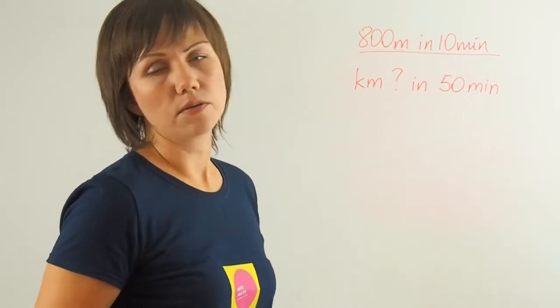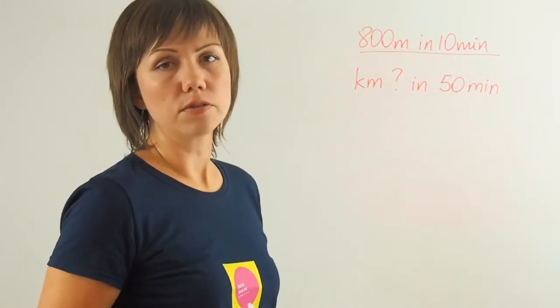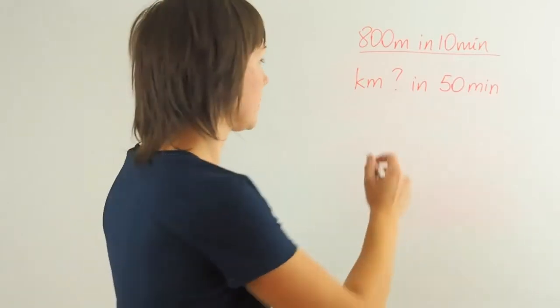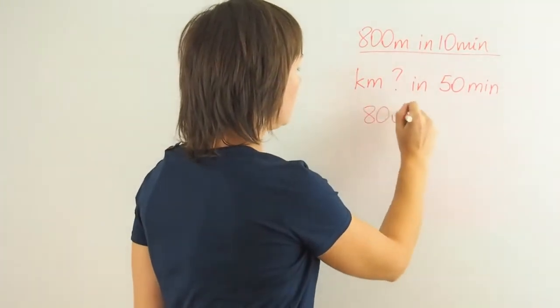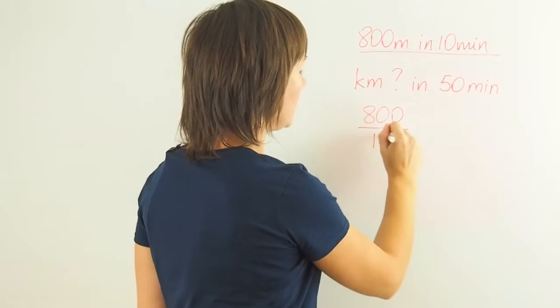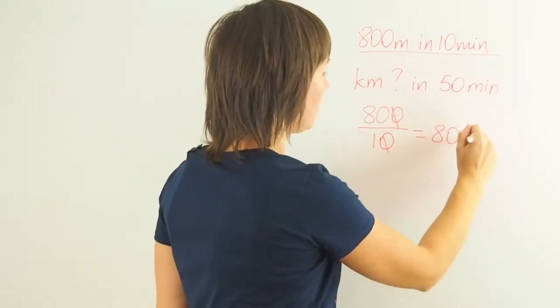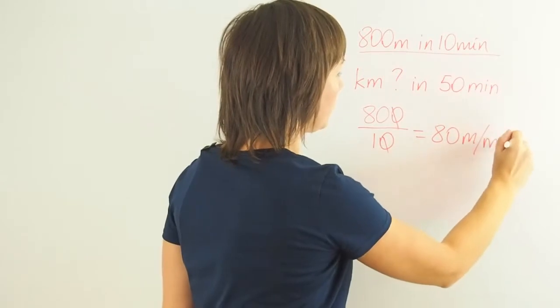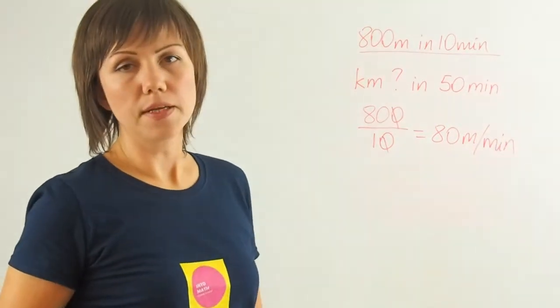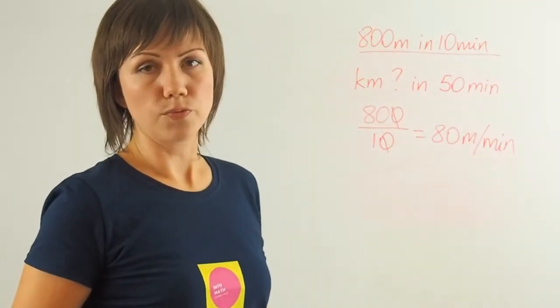So let's find out how many meters she runs in one minute. 800 divided by 10, that is 80 meters per minute. 80 meters per minute is the rate at which she runs.